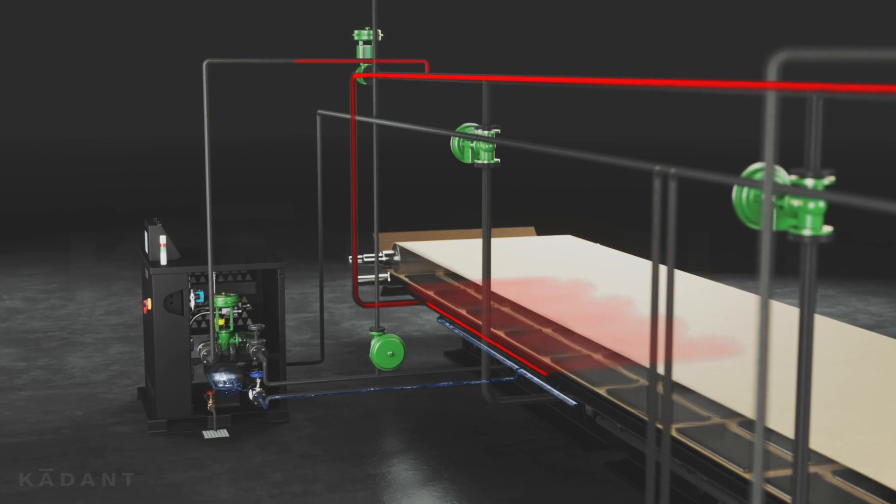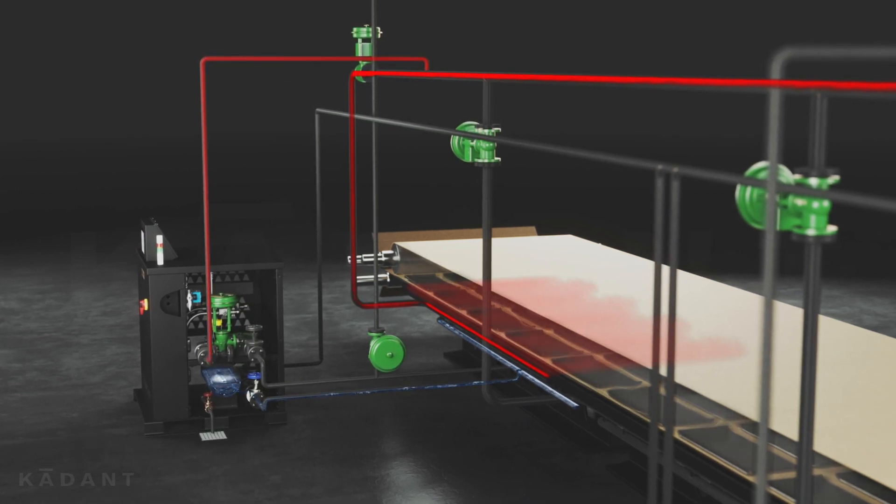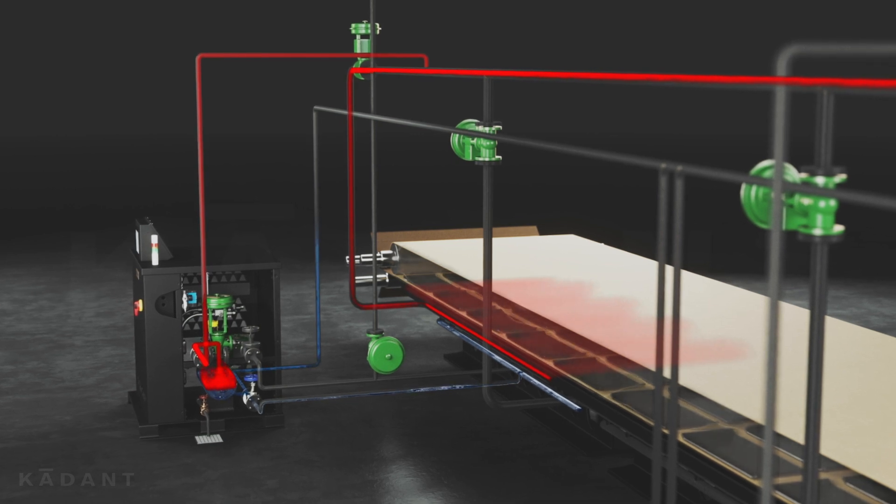It works by collecting condensate and using motive steam pressure to move the condensate into the condensate return line.